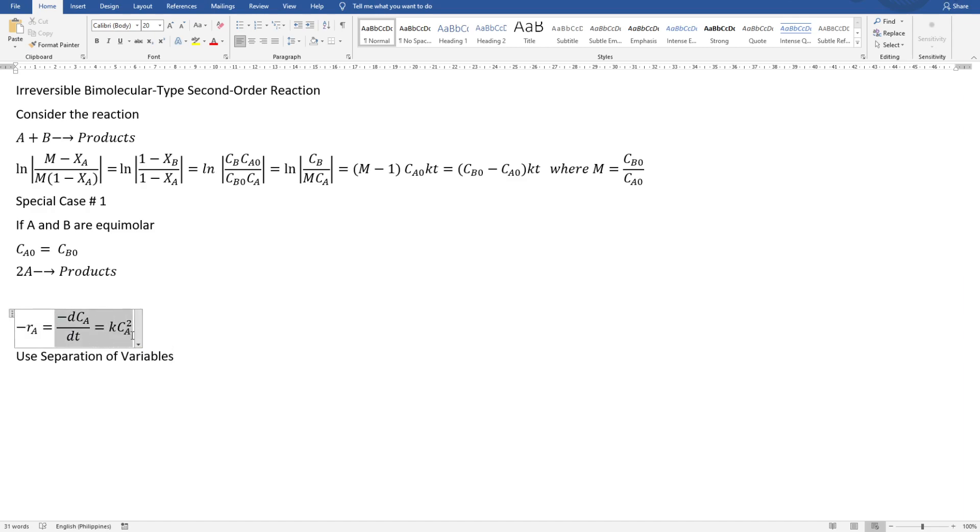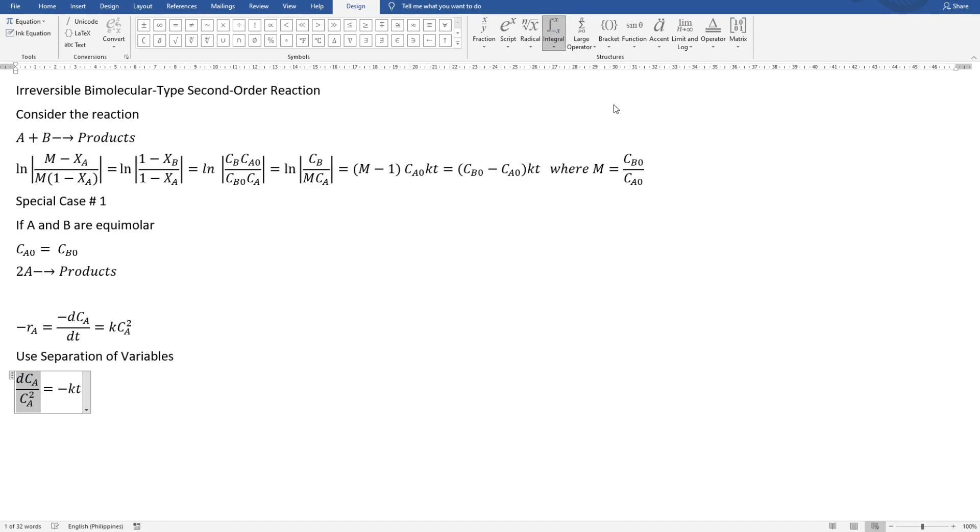Using separation of variables, we have two variables. The limit for this one, we have CAO and anytime we have CA.